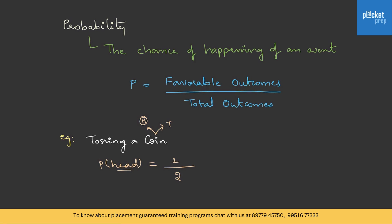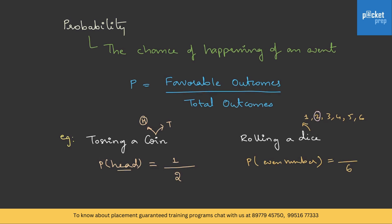Let me give another example. Suppose we are rolling a die — what is the probability of getting an even number? For a die, there are six possible outcomes: either it could be 1, 2, 3, 4, 5 or 6. Therefore, the total outcomes are 6. They are asking us to calculate even numbers — so 2, 4 and 6 — that is 3 possible outcomes, which will be the favorable outcomes. Therefore, the probability is 3 by 6, which is one by two.